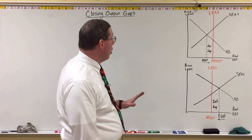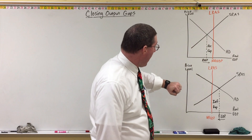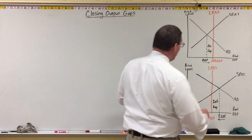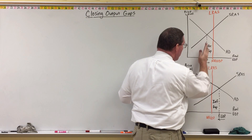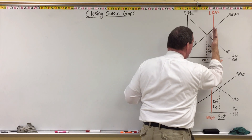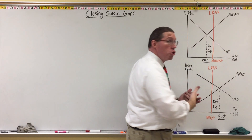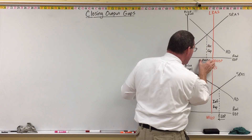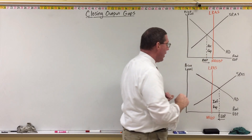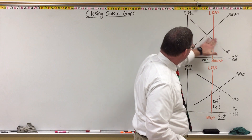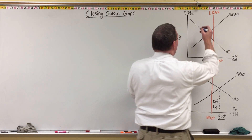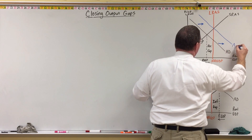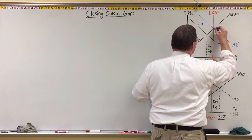So now let's see how we're going to close these output gaps — this recessionary gap and this inflationary gap — by shifting the aggregate demand curve. We want to increase real GDP when we're in a recessionary gap. We want to move this intersection point to the right so it sits on top of the long-run aggregate supply curve, going back into long-run equilibrium. The aggregate demand curve would have to shift to the right — we'll call it AD prime — and now the intersection is right there.